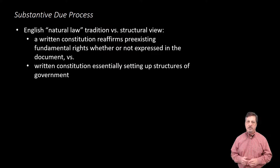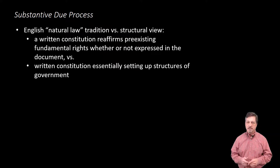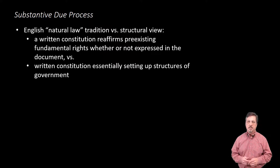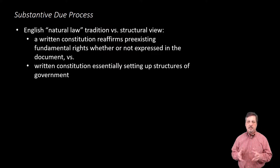Another view, prevalent in English jurisprudence before the American founding, suggested that written constitutions reaffirm pre-existing fundamental natural rights — that is, substantive rights to life, liberty, and property — even if those rights are not separately enumerated in the document. In this view, the Fifth and Fourteenth Amendment due process clauses are not merely procedural guarantees around rights the state or federal governments may or may not confer, but rather reflect the belief that individuals possess pre-existing substantive rights that cannot legitimately be eroded by any subsequent government action.